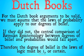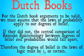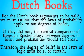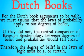We also remember from the Dutch book arguments that for those arguments to be valid, we must assume that the laws of probability apply to our degrees of belief. In other words, the laws of probability have to map perfectly onto degrees of belief — they have to be the same kind of things so that we can use the same rules for both.